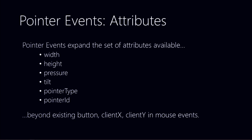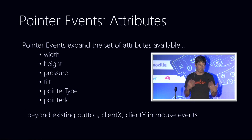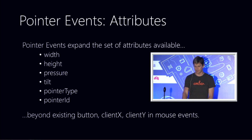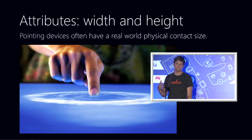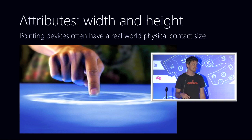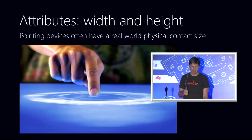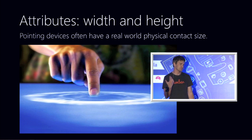What pointer events adds is a richer set of attributes on each event. The first is width and height — recognizing that pointer devices beyond the mouse have a real physical world width and height. When you put your finger down on the screen, depending on how you're pressing and whether you're using your thumb or index finger, it's going to have a different geometry, and this passes that through to your web app so you can respond appropriately.